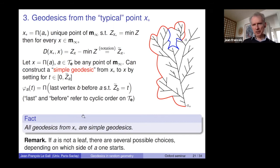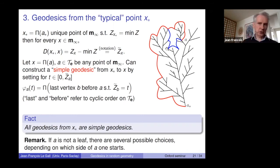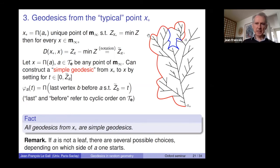If you start from a point which is not a leaf, you have several possible choices of simple geodesics. If a was not a leaf, you can start from the right side of a and construct one geodesic (the red one), or start from the left side and construct another (a different one). These are two simple geodesics that eventually coalesce. Points of the tree which are not leaves have more than one geodesic to X*. If you start from a leaf, you get only one simple geodesic, because except at the starting point, simple geodesics visit only leaves — you cannot choose the side to start from except at the initial point.